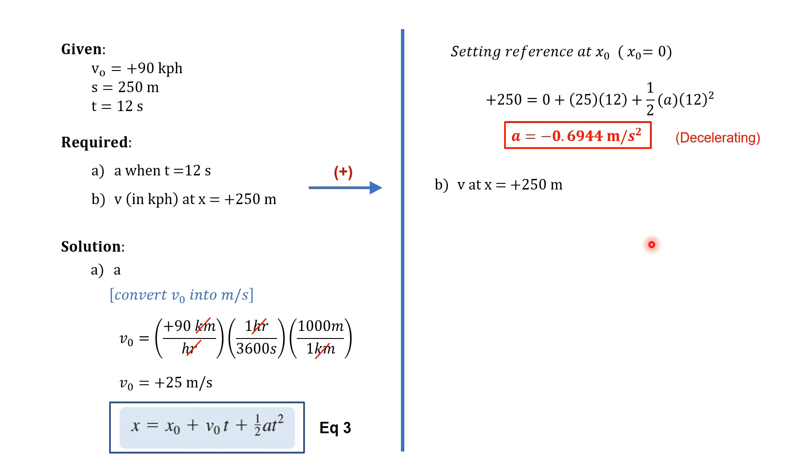For the second requirement, we need to compute the final speed when the motorist arrives at the traffic light. So this final position is positive 250 meters from the reference. So the final speed is just equal to the magnitude of final velocity.